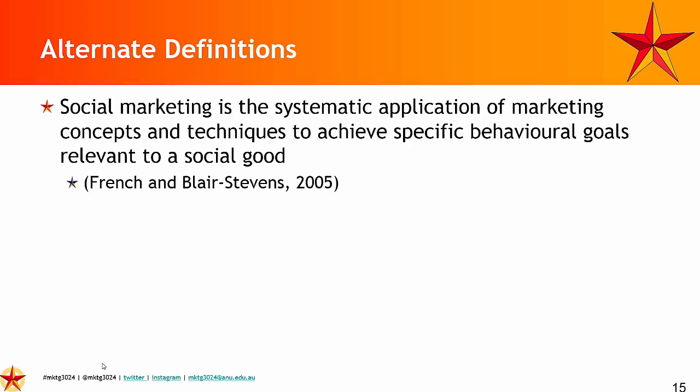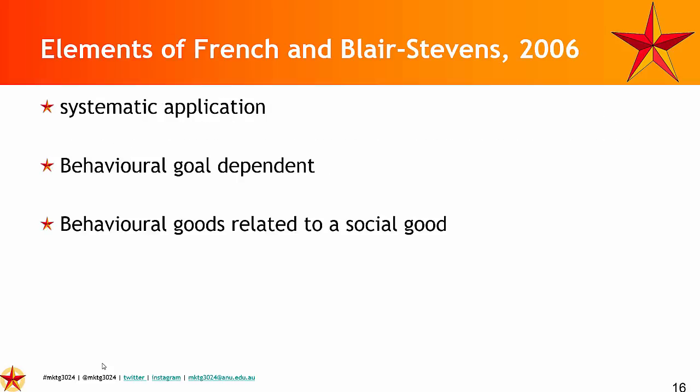Another influential definition is French and Blair-Stevens 2005, which came out of the United Kingdom and is the foundational definition that influenced the British National Social Marketing Centre. Jeff French is also the founder and ongoing manager of the World Social Marketing conferences, and Clive Blair-Stevens was the influential brains behind the National Centre. When they set a definition, it influenced most of British health policy — the NHS's health policies involving social marketing were influenced by this definition from 2005 through to about 2014–2015. Their definition also comes with a couple of sub-goals and sub-components, with everything oriented towards a social good.